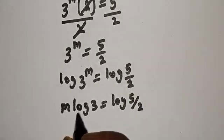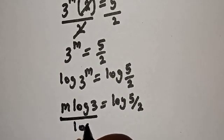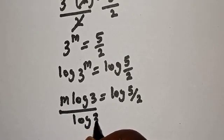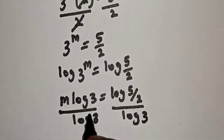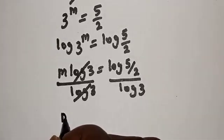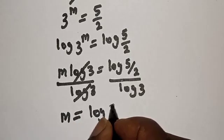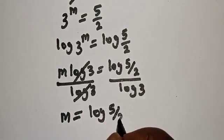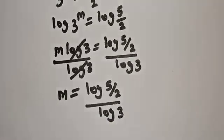So m times log 3 equals log(5/2). We are looking for the value of m, so let's divide both sides by log 3. This gives us m equals log(5/2) divided by log 3.